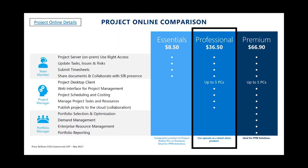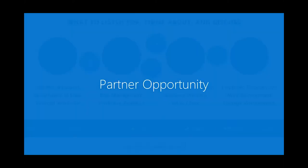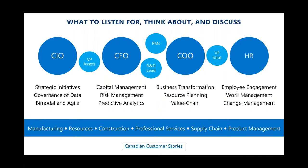One important note on the Essentials offering: it can't be purchased individually in isolation. Essentials works off projects that are published to the cloud — a feature included in Professional and Premium. There's no fixed ratio: you can have one Professional and a thousand Essentials. But as long as you have at least one Professional or Premium license, those using Essentials will get value from that offering.